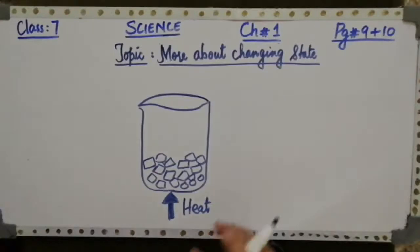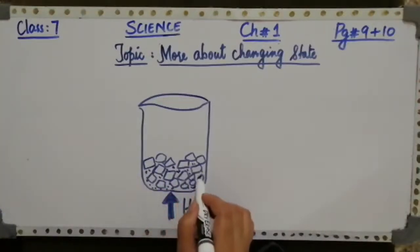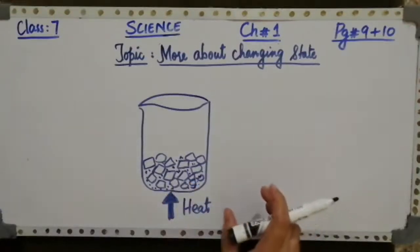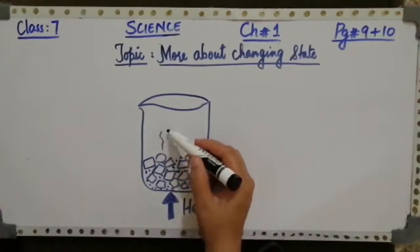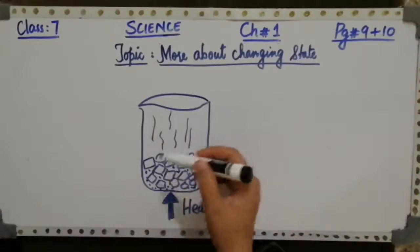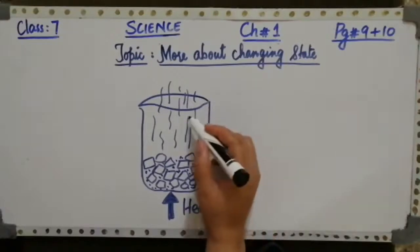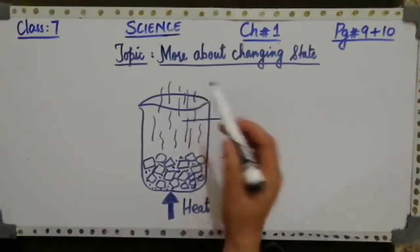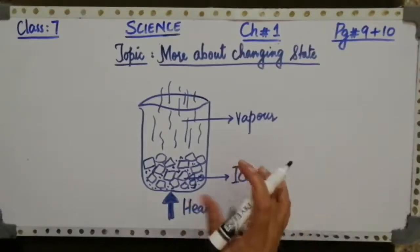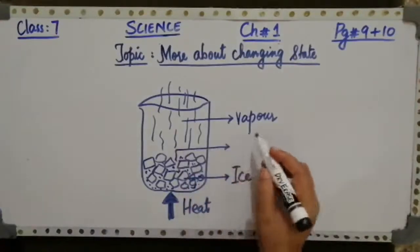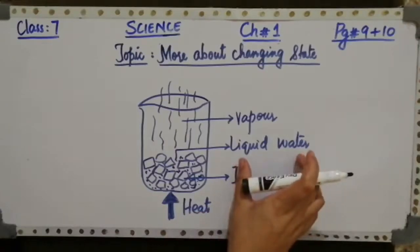The ice is gently warmed until it melts. What you will observe after some time is that some liquid water will also appear along with the ice cubes. The heat is then turned up until the water begins to boil. If the heat is increased, the ice changes into liquid water and the liquid water starts boiling. After this, the water vapors get mixed into the air.